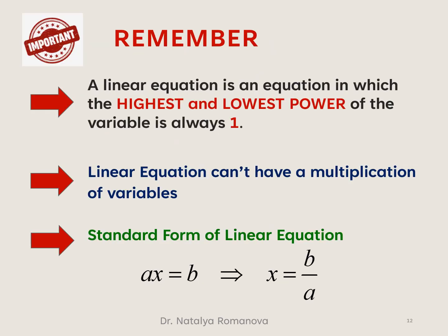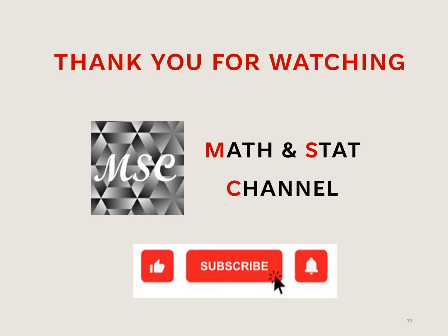Important information from this video: a linear equation is an equation in which the highest and lowest power of the variable is always 1, and it cannot have a multiplication of variables. The standard form of a linear equation is Ax equals b, and we can find x equals b over a by dividing both sides by a. I hope this video is useful for you. Thank you for watching the MSC channel. See you soon.